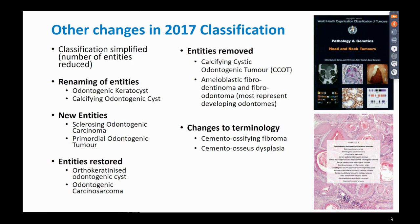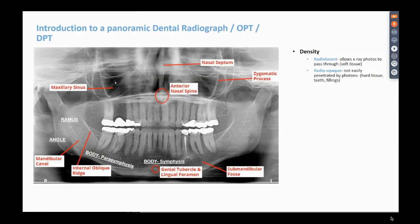Some older entities from the 1992 classification have been restored, including orthokeratinized odontogenic cyst and odontogenic carcinoma, but some entities have been removed, including calcifying cystic odontogenic tumor and ameloblastic fibrodentynoma. There have also been changes to terminology, particularly in relation to ossifying fibroma — the word 'cemento' has been added to highlight that parts of these lesions are actually odontogenic in origin. Before going into the pathology, I'd like to briefly take you through some radiological features that we look at.